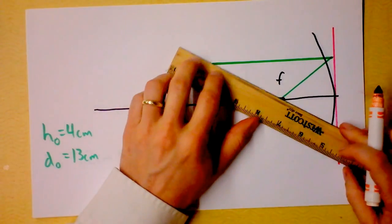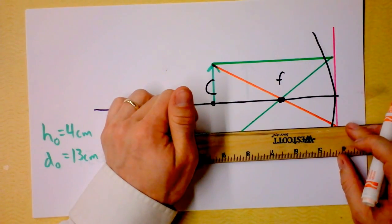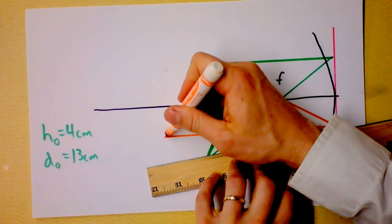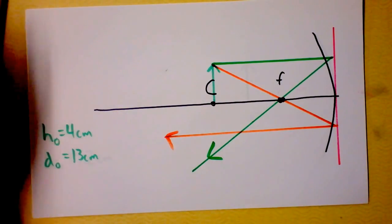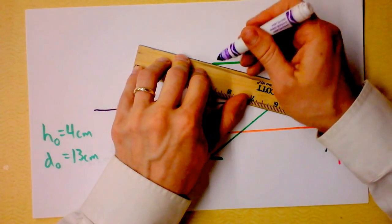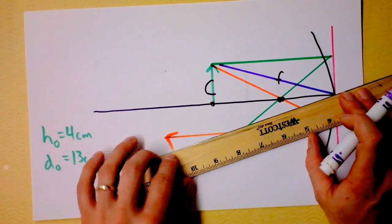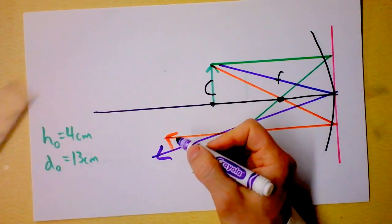The F ray comes in through the focus and comes out parallel to the axis. Then we have a C ray that comes through the center and bounces out at the same angle at which it came in. It ought to be something like this — that's our C ray.